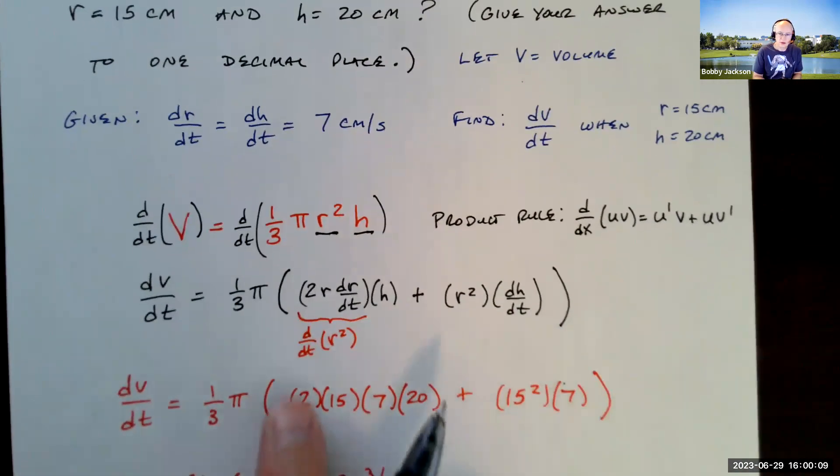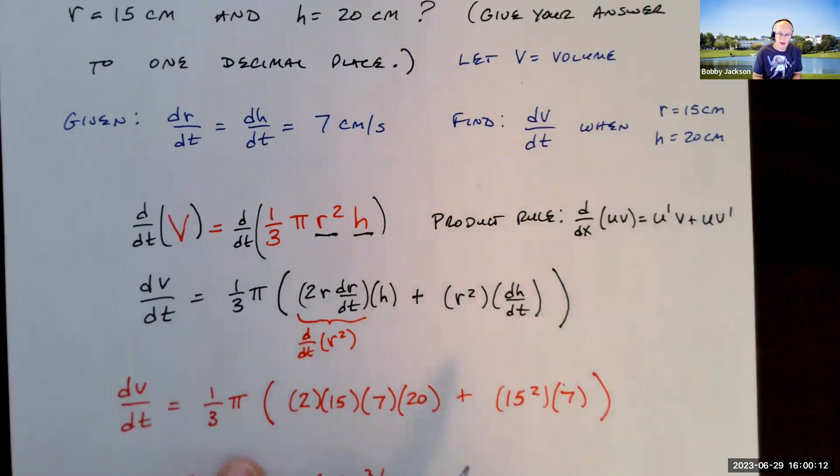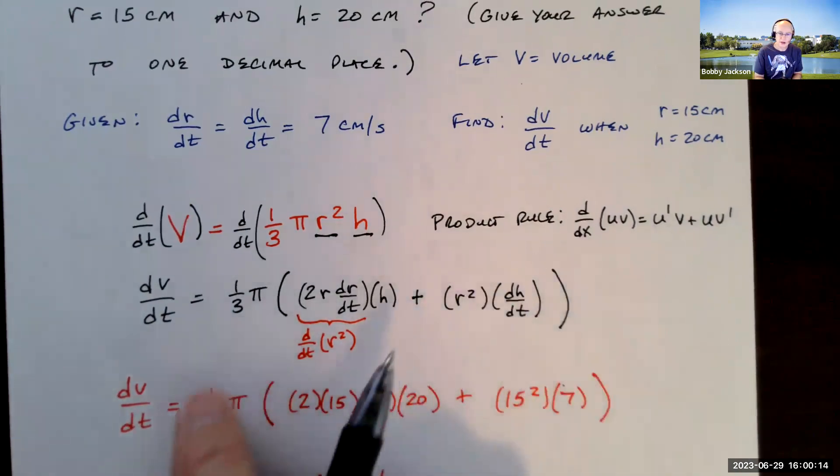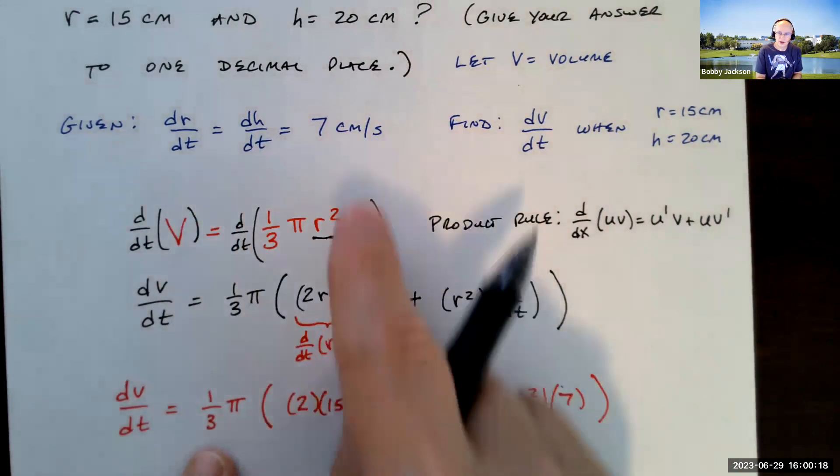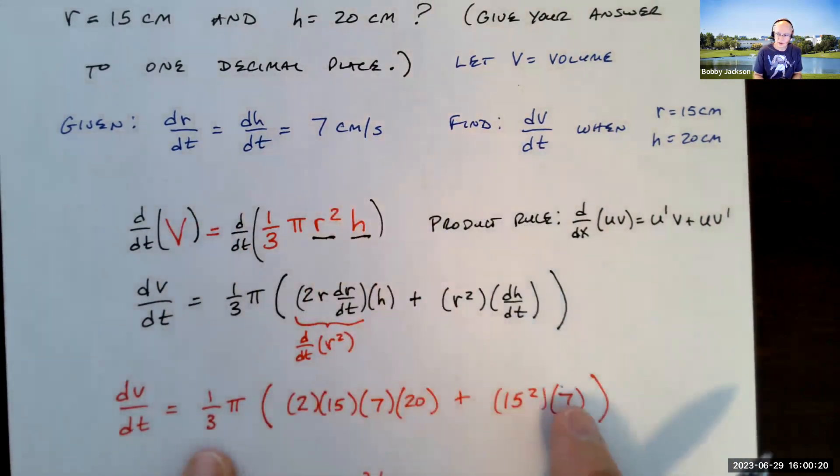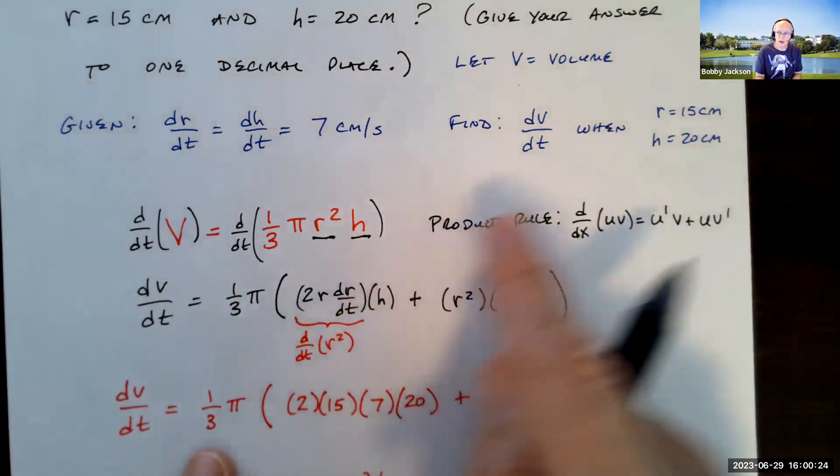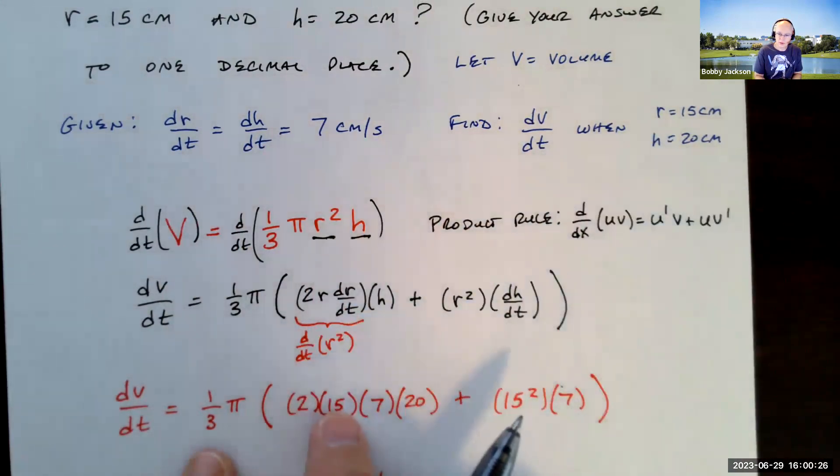So all I'm going to do, I'm not going to simplify anything. I'm just going to plug in. I got all the values I need. So we want to find it when both dr/dt and dh/dt are 7. So I'm going to replace those with 7 here and there. And then r is 15. I replace r with 15 there. And h is 20.